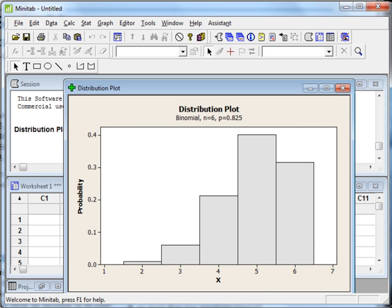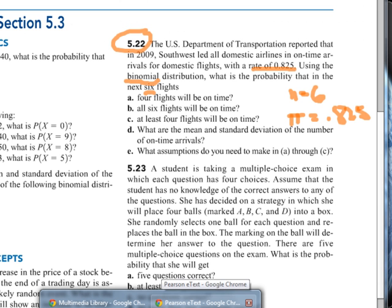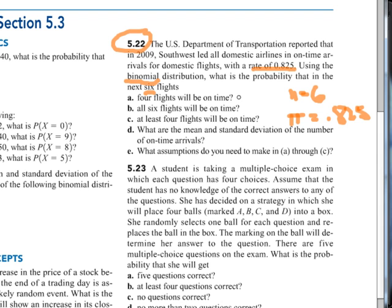So let's go back to the problem. In the problem, part A says, basically, what is the probability that in the next six flights, four will be on time? So in terms of the probability notation, we would say probability that X equals 4. So we're looking at a direct event, single event, where X is equal to 4, or the number of flights that are on time are four.